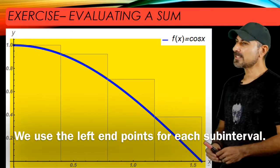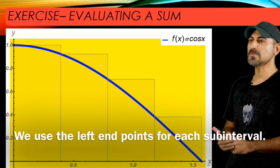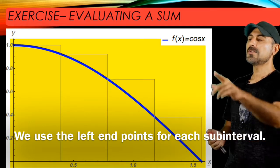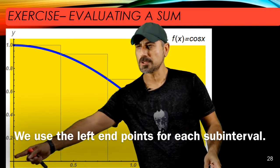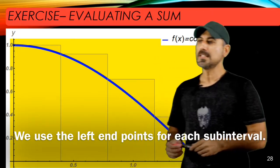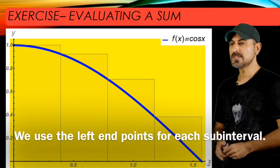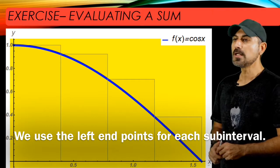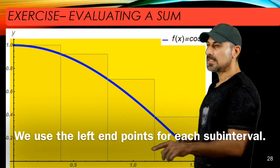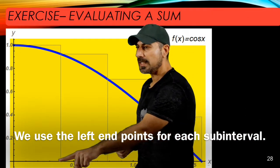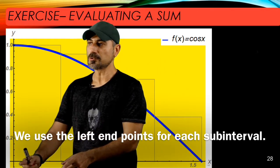Here is the graphical outlook before we start writing the sums. As you see, the function is cosine x and the interval is zero and pi over two. What we did here is split the interval zero and pi over two into four equal pieces, and I chose the left end of each subinterval to construct those rectangles.